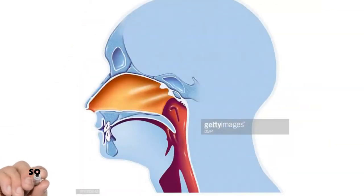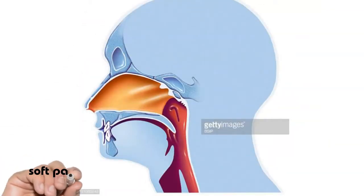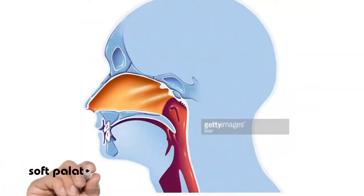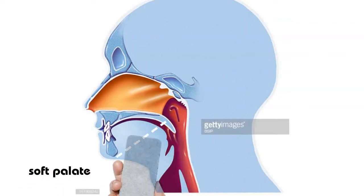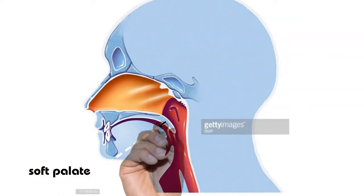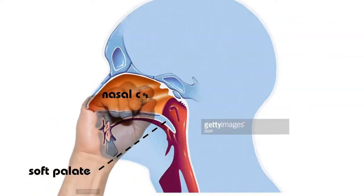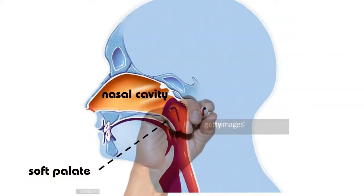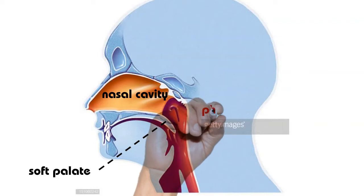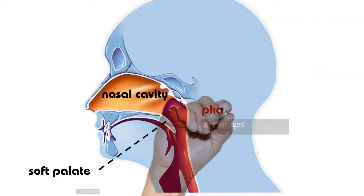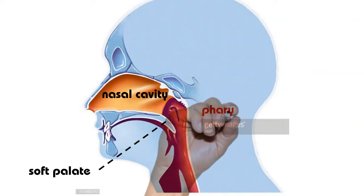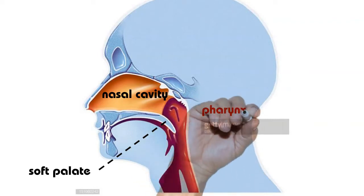As food is swallowed, the soft palate blocks the upper pharynx to prevent food from entering the nasal cavity, and multiple voluntary muscles in the face, neck, and tongue contract, pushing food particles through the pharynx.